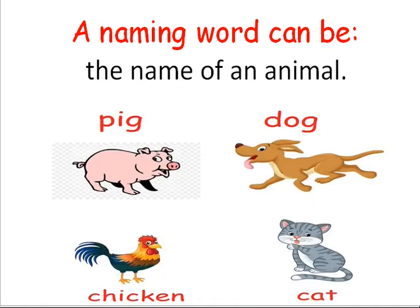A naming word or noun can also be the name of an animal. For example, pig, dog, chicken, and cat. These words name the animals and are therefore naming words or nouns.